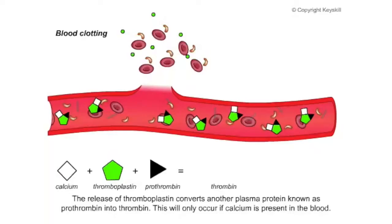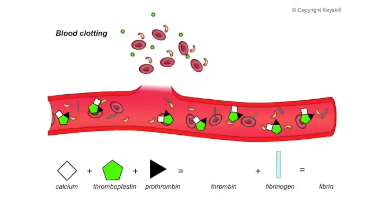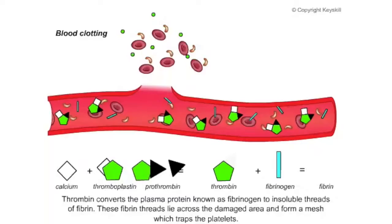The process will only occur if sufficient levels of calcium are present in the blood. Thrombin converts a plasma protein known as fibrinogen to insoluble threads of fibrin.